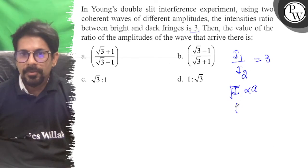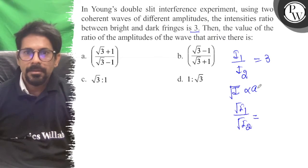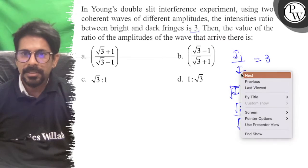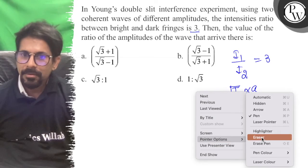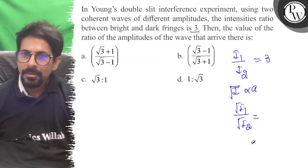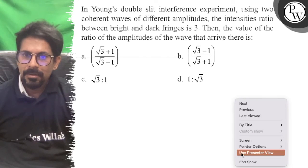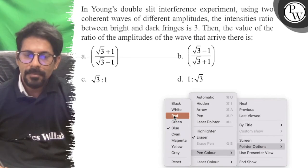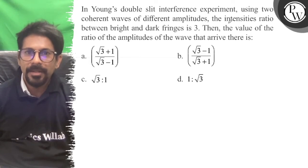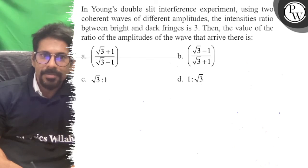So root I1 upon I2 is the amplitude ratio. I have given the I maximum and I minimum ratio. See, the coherent waves are different, so the intensity ratio between...